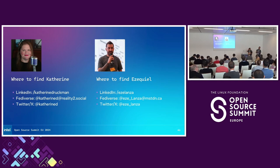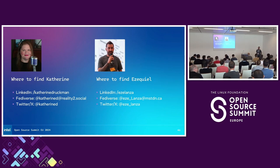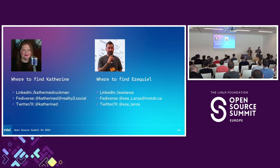How you use it is with the API that OPEA provides, and on top of that you can build whatever you want. There are some parts of the GitHub — like GenAI Evaluations — that are like reference architectures or ways to evaluate how the architecture works.